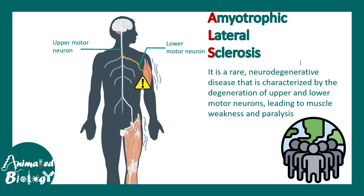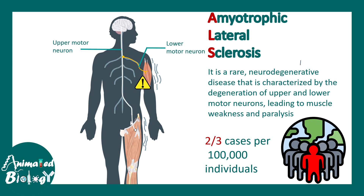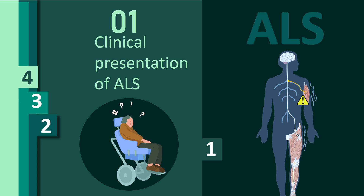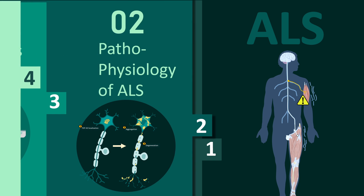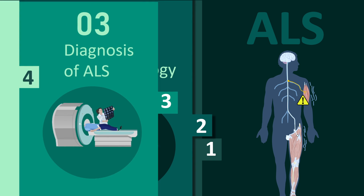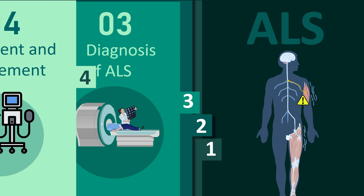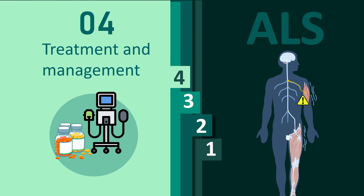Regarding prevalence, two or three cases per every 100,000 individuals are reported in Europe. In this video we'll be covering the clinical presentation of ALS, the pathophysiology of ALS, the diagnosis of ALS, and finally the treatment and management options for this disease.